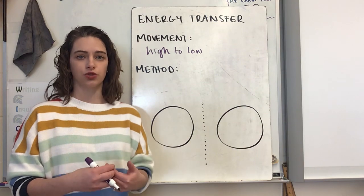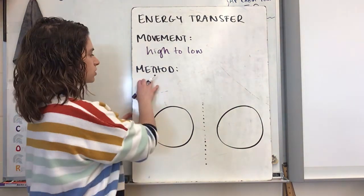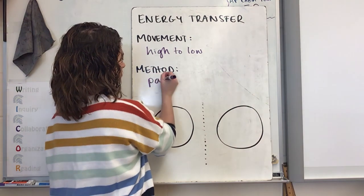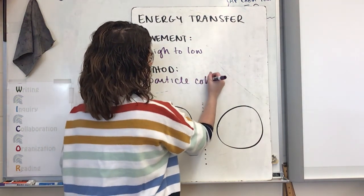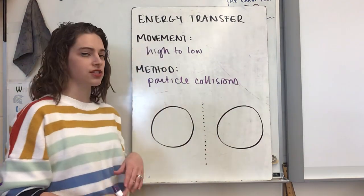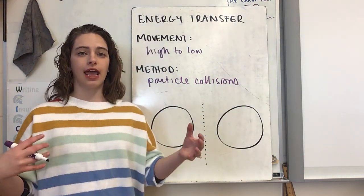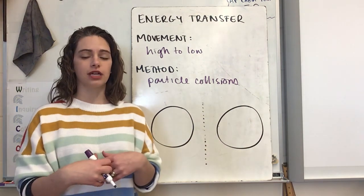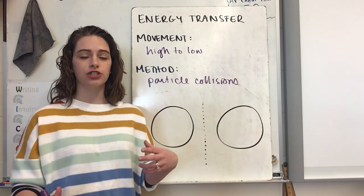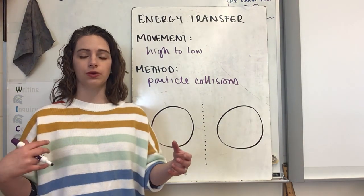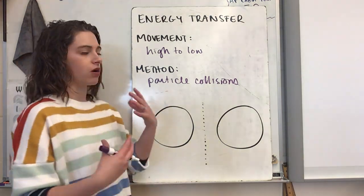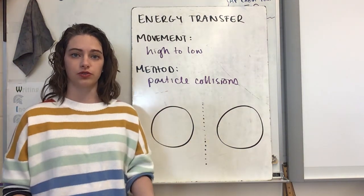They have to be able to touch in order to transfer energy, so the method of transfer is particle collisions. Whether it's a chemical reaction where compounds hit each other to break or form bonds, or thermal energy where things collide between high energy and low energy — no matter what, particles have to collide in order to transfer those energies.